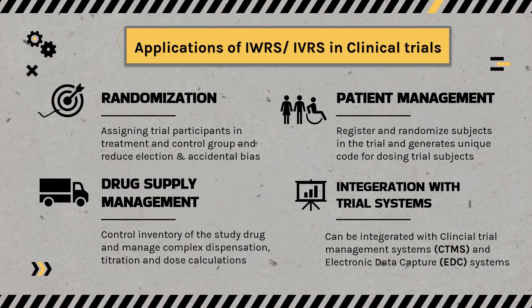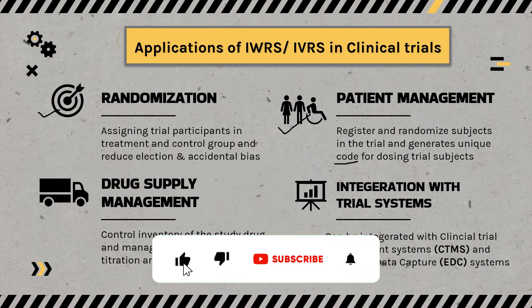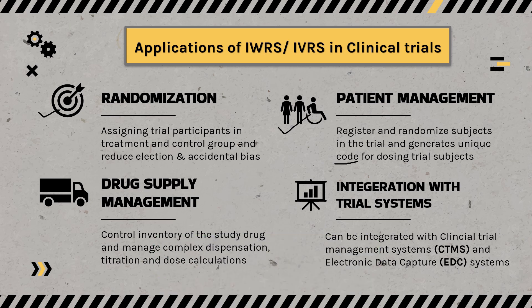The second application is patient management. Using IVRS or IWRS technology, you register the subject, then randomize the subject and receive a unique code. This unique code helps the trial coordinator know what kind of dosage is to be given. It gives a unique code that does not match any other code, so there is no confusion or overlapping, which helps in patient management and drug dispensation.